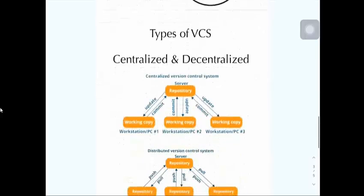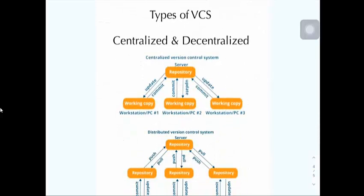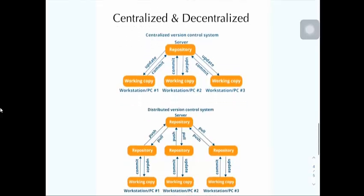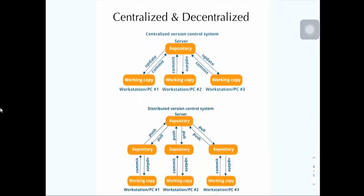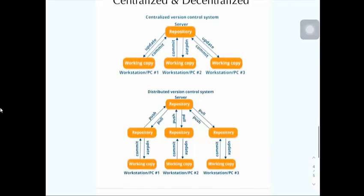Let's talk about the different types of version control. The main ones are centralized and decentralized version control. The first one we'll go over is centralized version control. In centralized version control, the server is where all of our code is stored. No developer will be storing the repository on their workstation.